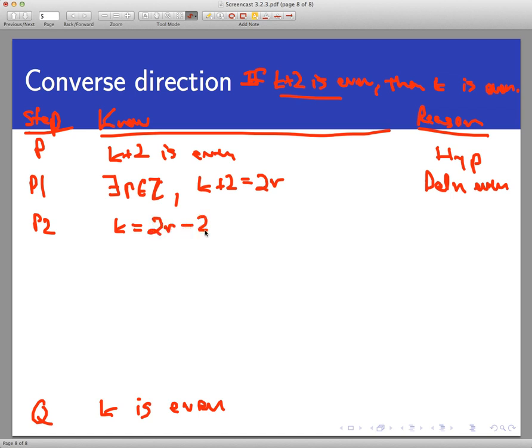And now I see that I can factor a 2 off of this side. So I have 2 times r minus 1. That's factoring. And now, pretty similar again to the forward direction, I can say that let's call it w equals r minus 1, is an integer by closure. r is an integer because of line P1 said so right there. So r minus 1 by closure is also an integer.